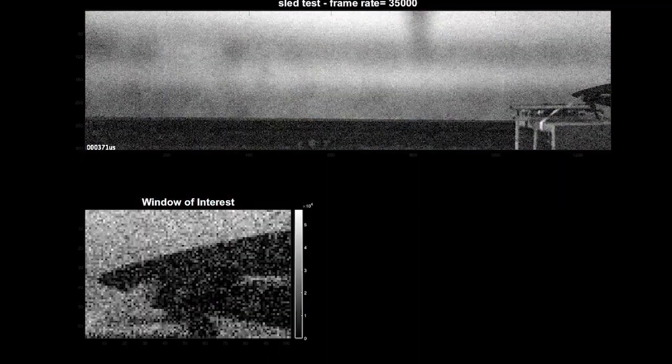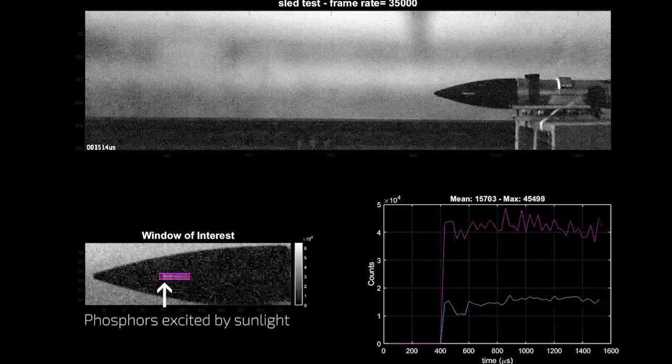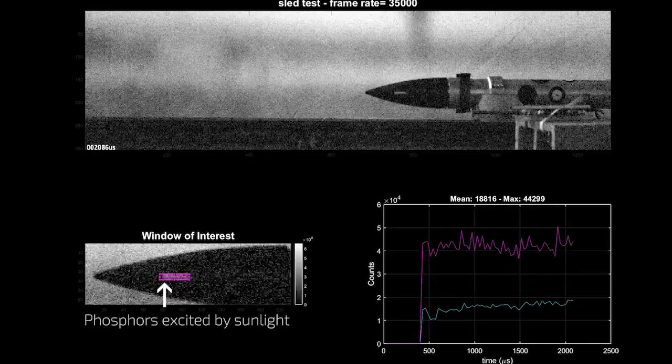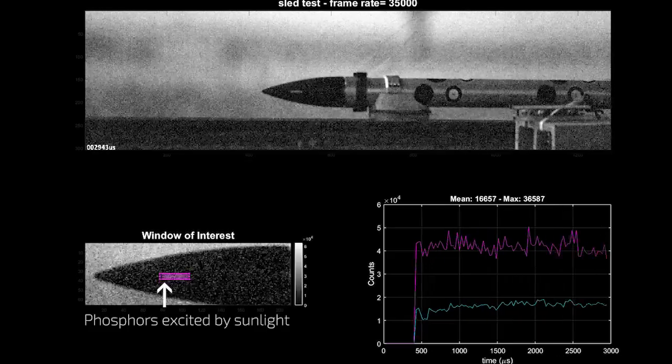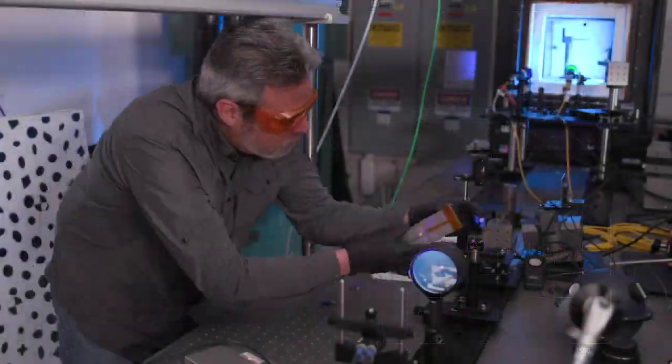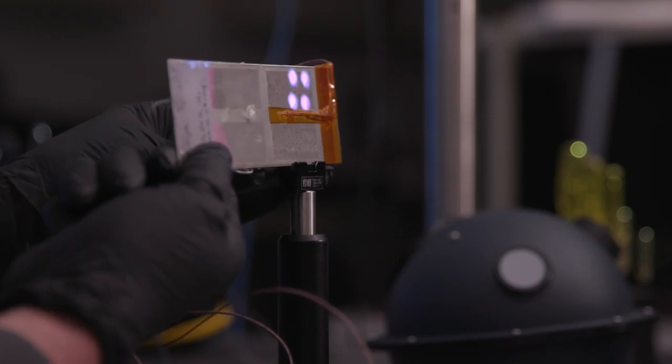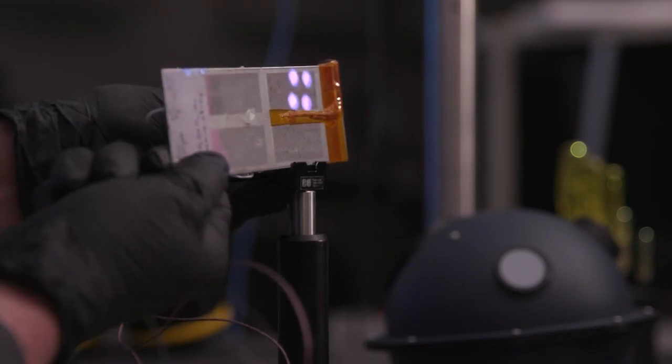So what's incredible about TP-DIC is its tunability to the application where it's needed. We can adjust the length scale to be under a microscope to a rocket nose cone. We can work from cryogenic temperatures up to flame temperatures. And we can capture dynamic behavior. So we can look at tests that happen on the order of hours, but we can also capture phenomena that happen in the blink of an eye.